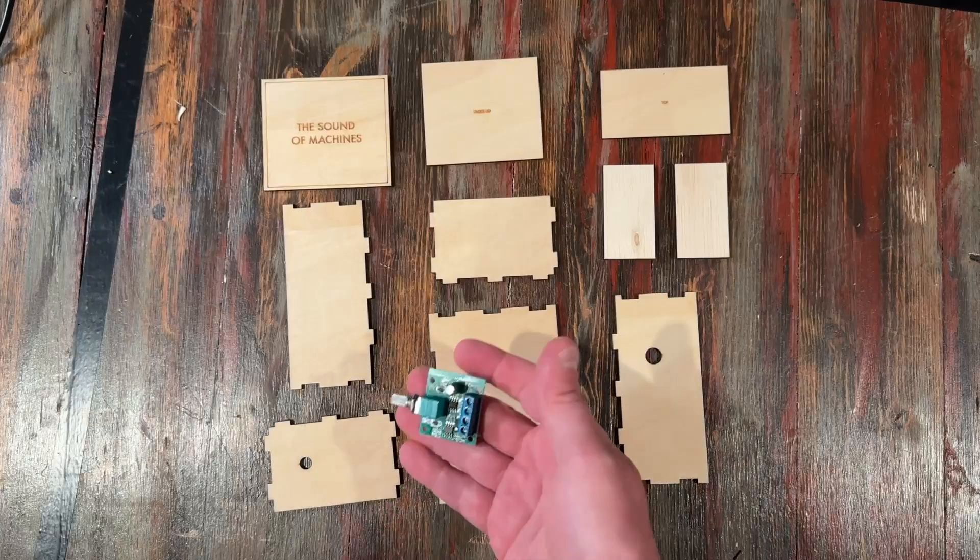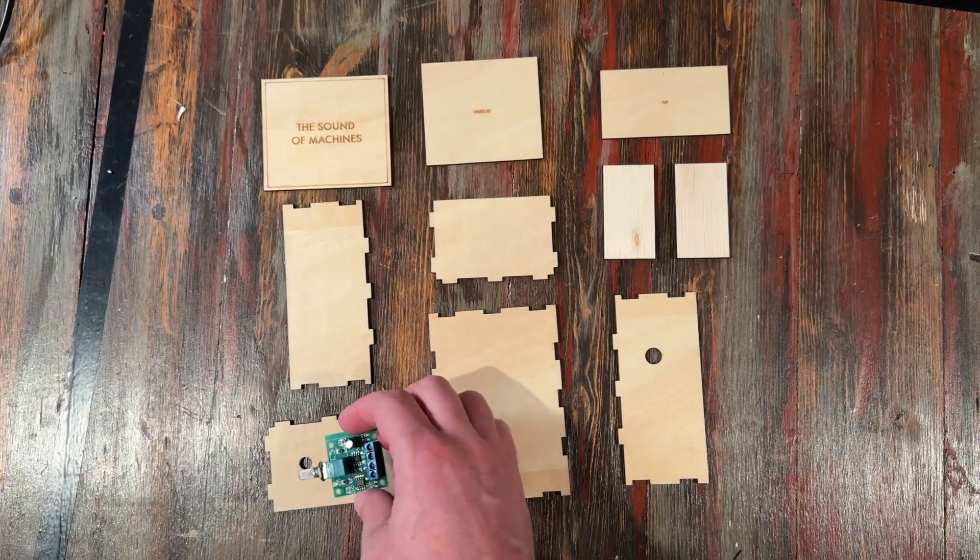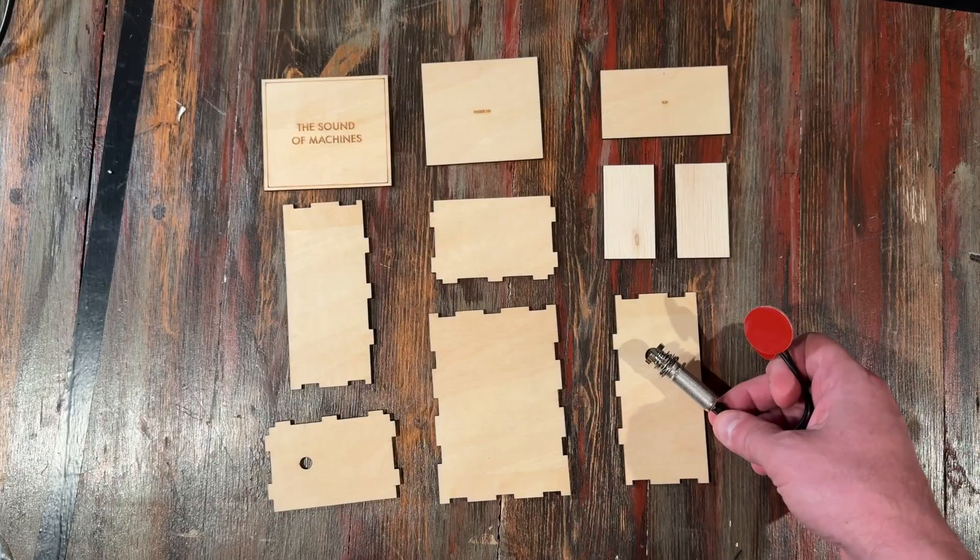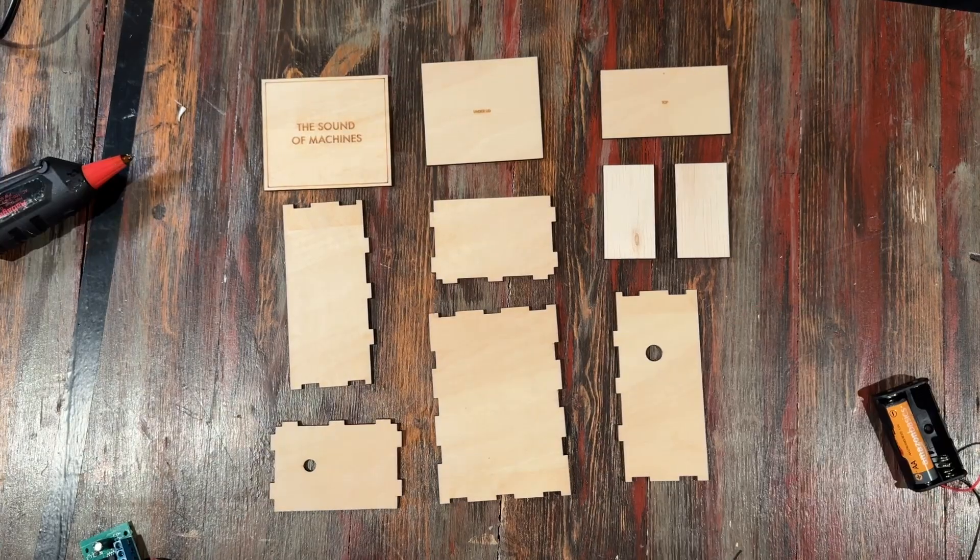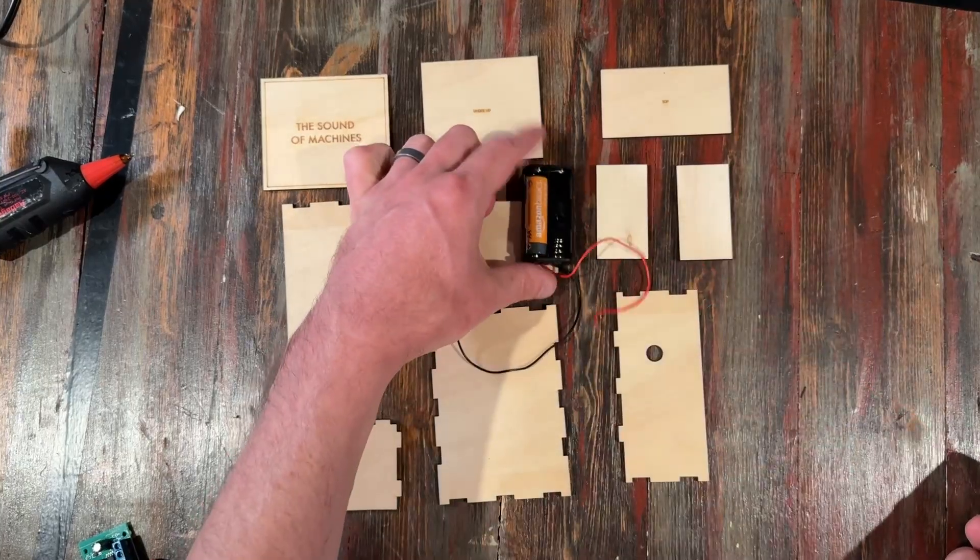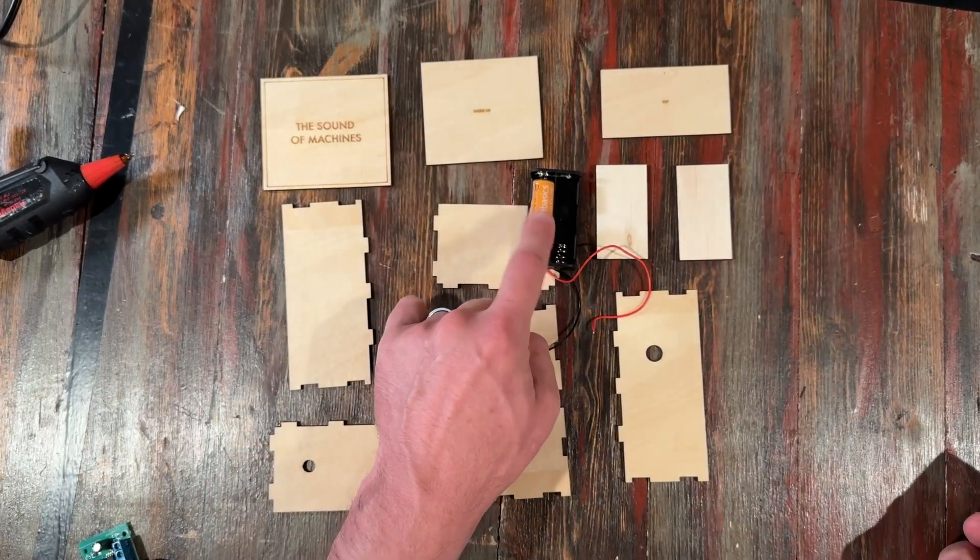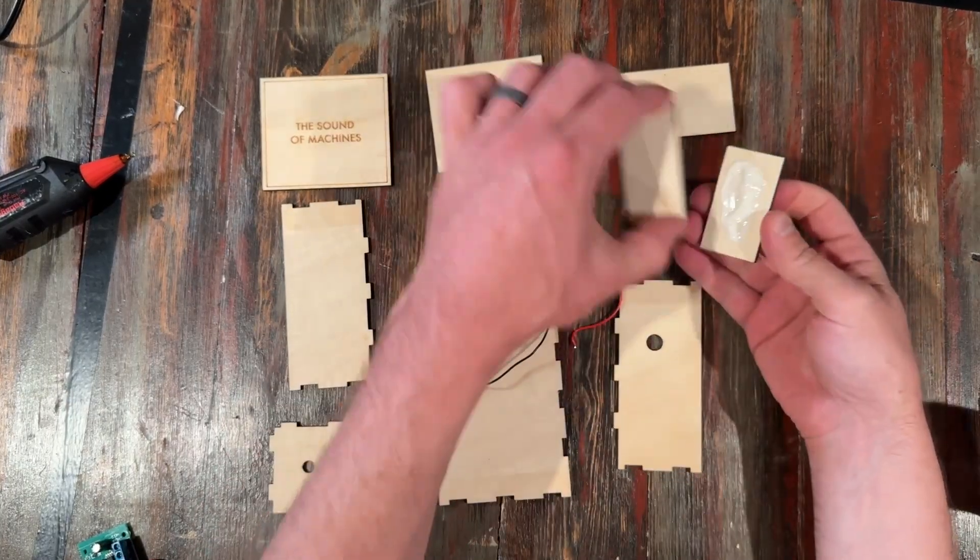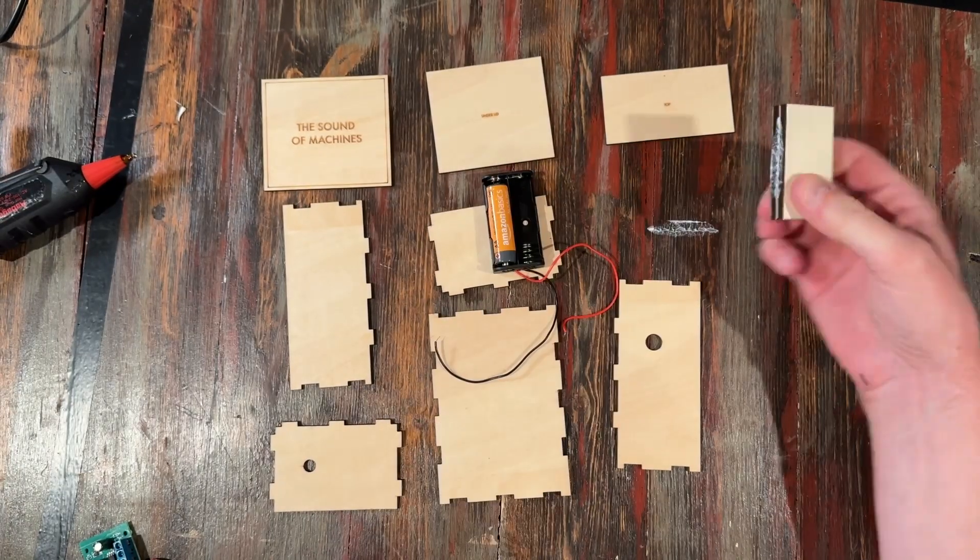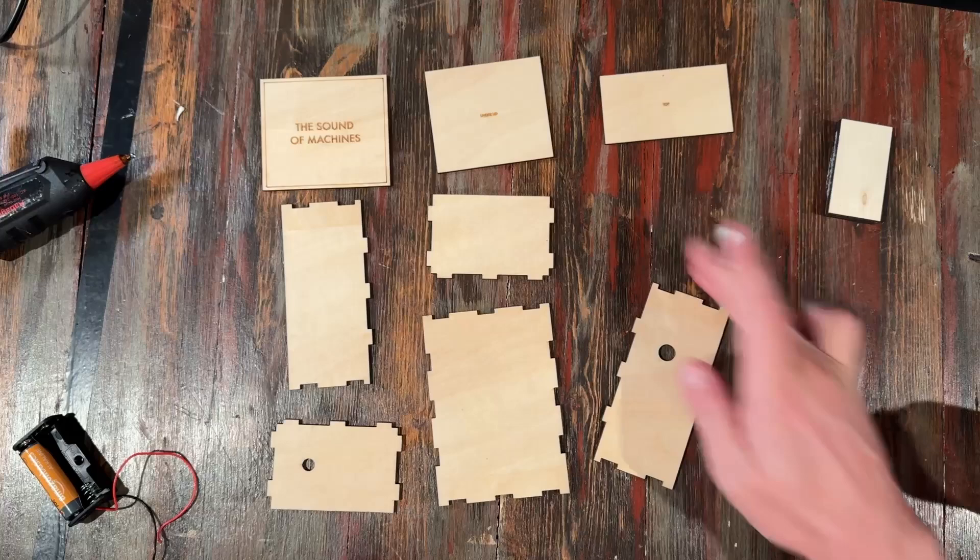So this piece here has a hole that is specifically for the speed control, and this one has a hole that is for the output of the contact mic. Now I start with these two pieces and I glue them together. These go under the battery holder and makes it just a little easier to access the batteries. If I had a thicker piece of wood here, I'd probably just use a single piece. So I put that aside to dry and move on.